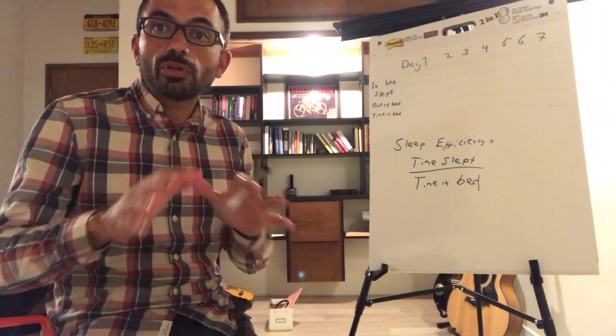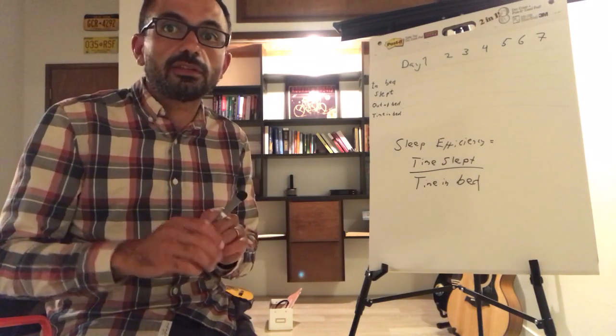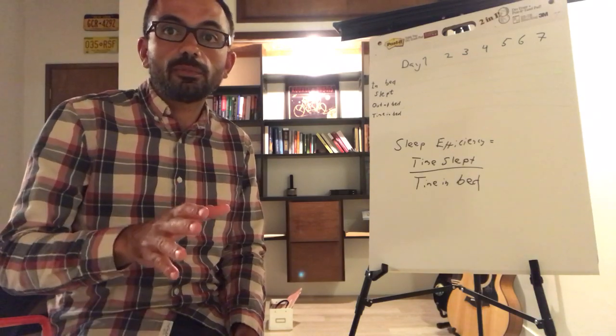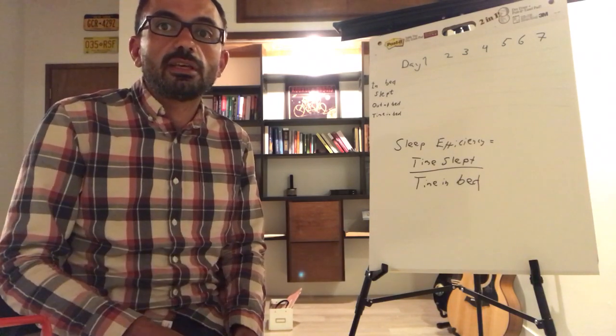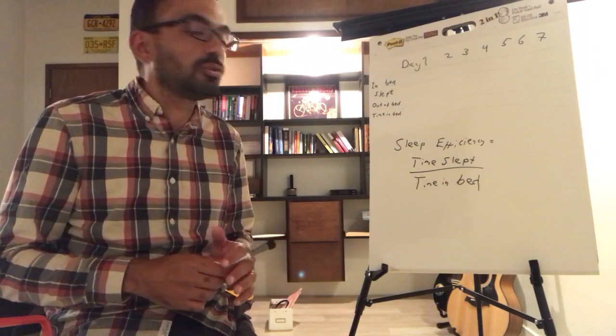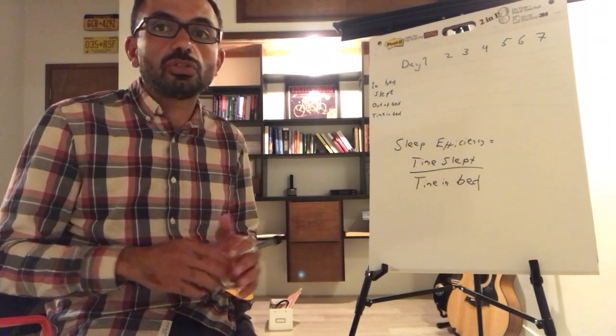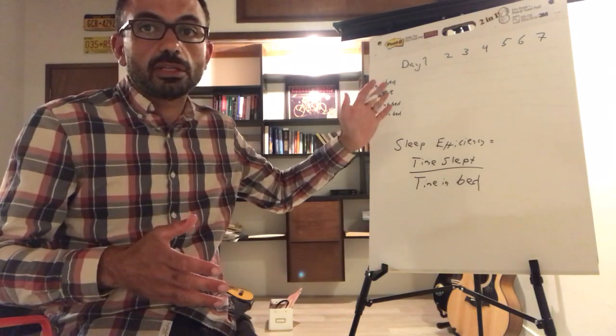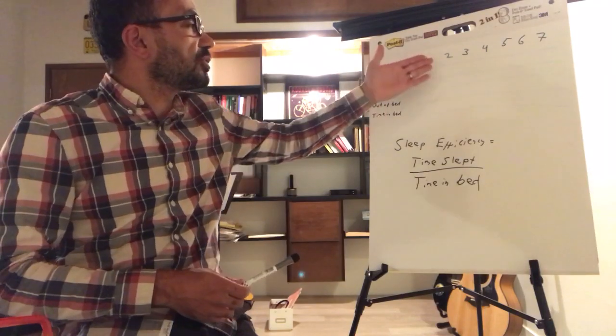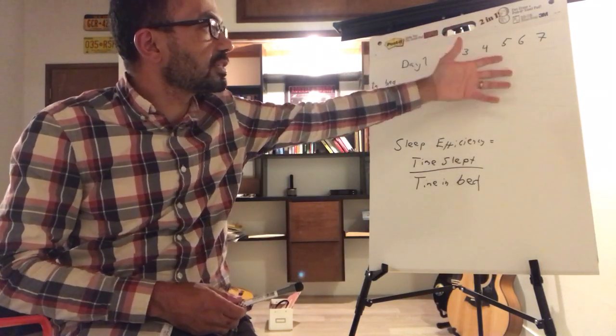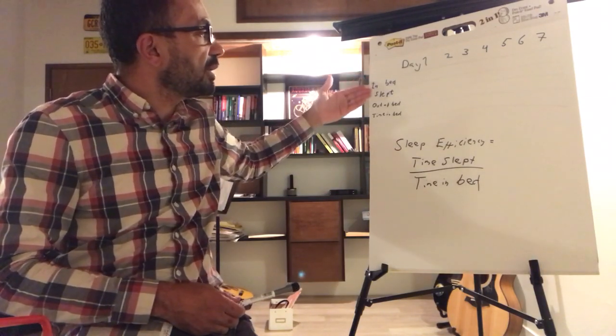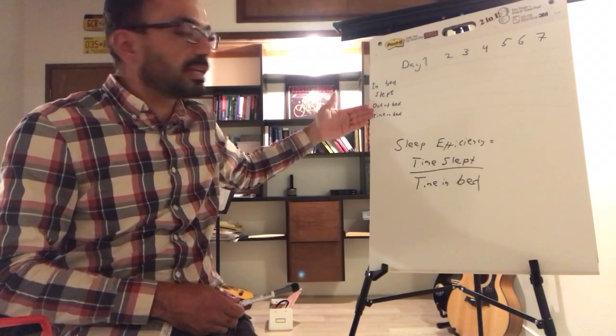What will be helpful moving forward is if you have a sleep diary so you can keep track of how you're doing. You can grab a pen and paper and create something like what I've sketched out here. Up on top it says day one, two, three, four, five, six, seven, and here it says in bed, slept, out of bed, and time in bed.